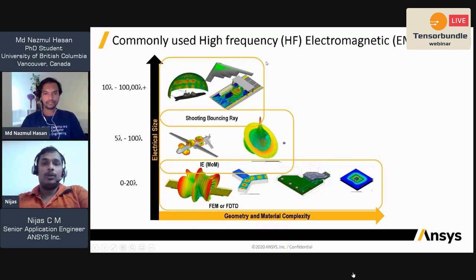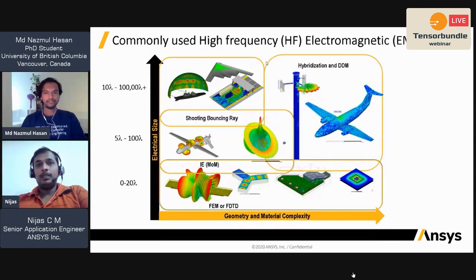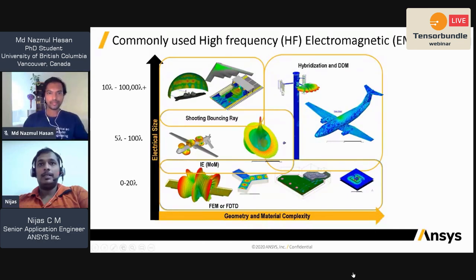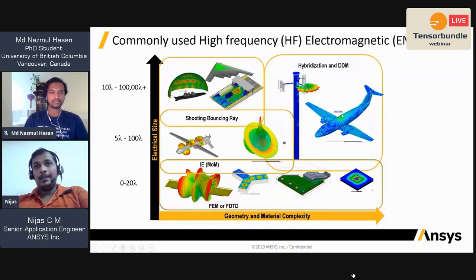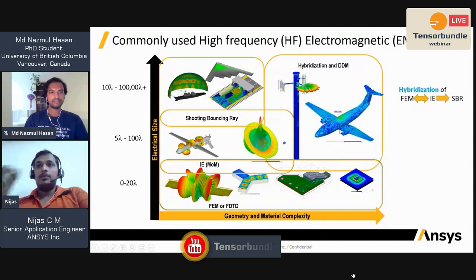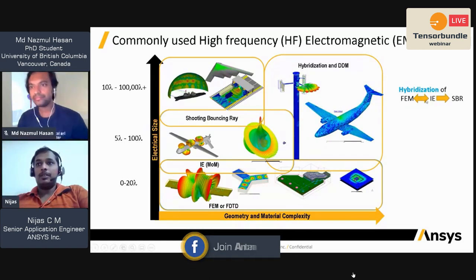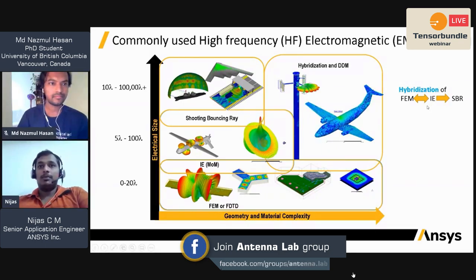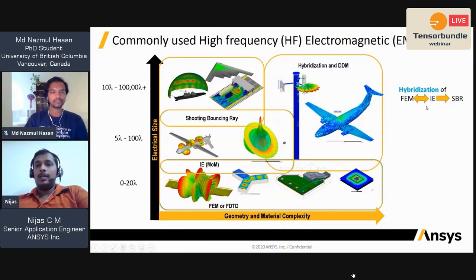As you go up in scale, the complexity of handling the simulation lessens but you are compromised on problem complexity. Most simulations now come with hybridization — for example, simulating the FEM for an array and the rest with an IE solver, or a blade antenna on aircraft simulated with FEM or IE while other parts are simulated with SBR+ — all solvers working together on a single design.